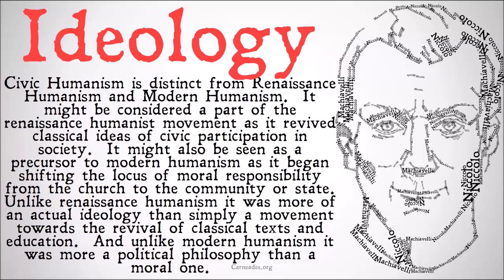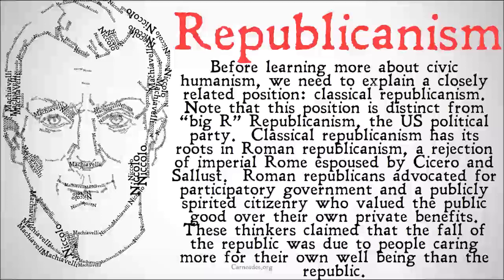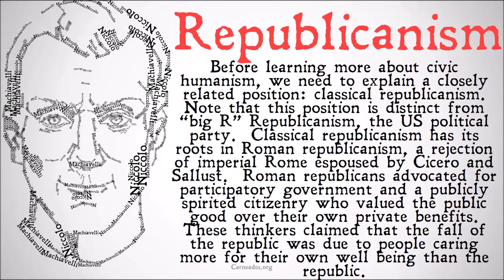Before learning more about civic humanism, we need to explain a closely related position: classical republicanism. Note that this position is distinct from big-R Republicanism, the U.S. political party. Classical republicanism has its roots in Roman republicanism, which was a rejection of imperial Rome espoused by Cicero and Sallust. Roman republicans advocated for participatory government and a publicly spirited citizenry who valued the public good over their own private benefits, as opposed to an imperial state run by an emperor. These thinkers claimed that the fall of the republic was due to people caring more for their own well-being than for the well-being of the republic as a whole.